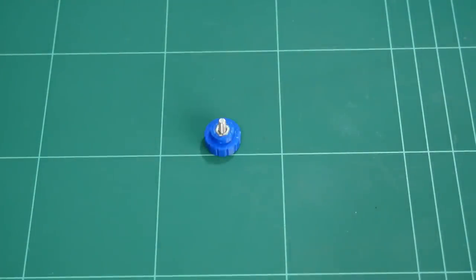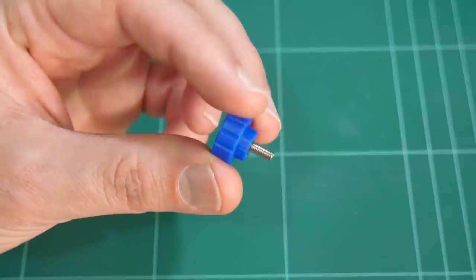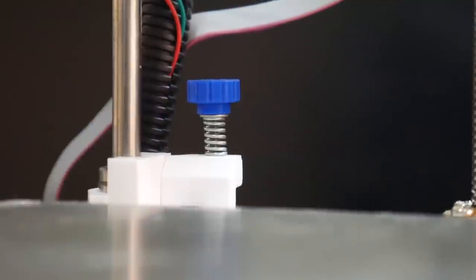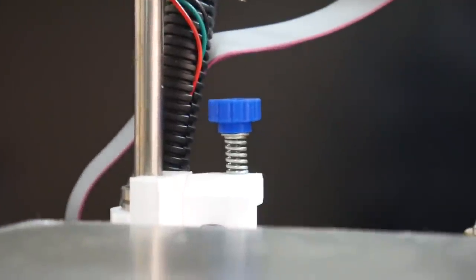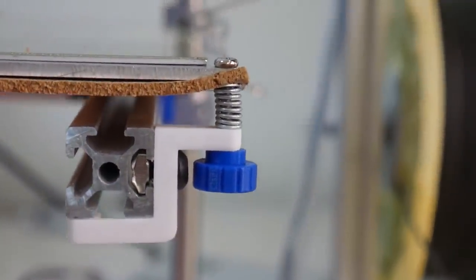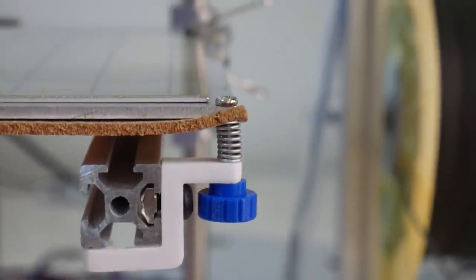And if you're thinking about making the Hypercube set, this particular Bowden knob can also be used in other areas of the printer. So the Z-axis end stop adjustment, you can now use the Bowden knob to adjust the Z-axis height. And also, for the bed springs, you can use this Bowden knob underneath the bed to adjust the height of each corner.